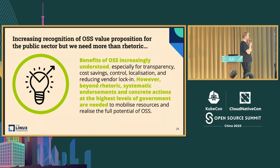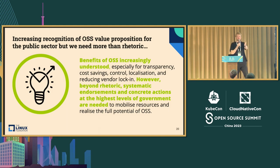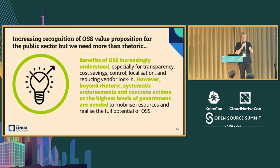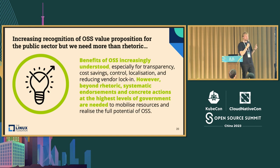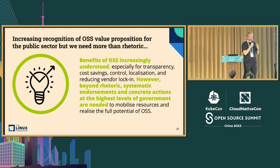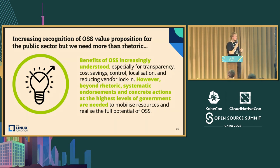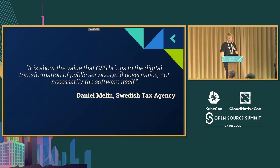Our objectives were to understand the state of open source in the public sector across Europe, identify barriers and enablers for shifting to open source or increasing open source activity, and identify priorities. We spoke to 30 people from 14 countries in Europe. With all this political talk, there is an increasing recognition of the value — cost savings, control, localization, and reducing vendor lock-in. When we did this research, 12 out of 27 countries in Europe had a dedicated OSPO. The representatives of these teams said what they want from politicians and senior leadership is systematic endorsements and resources — not just comments.